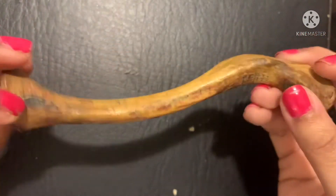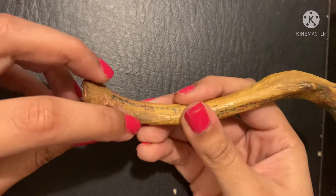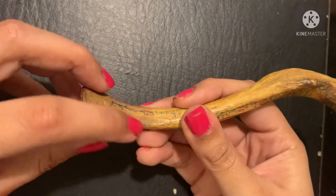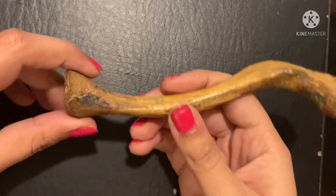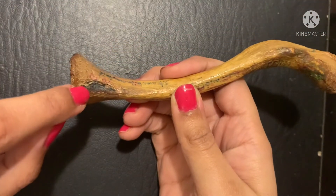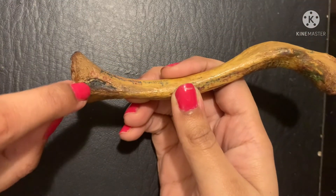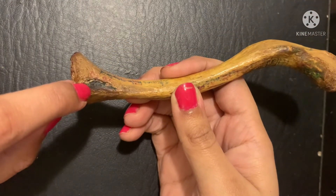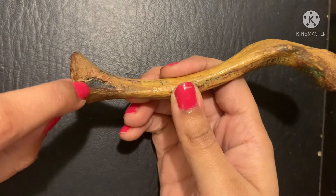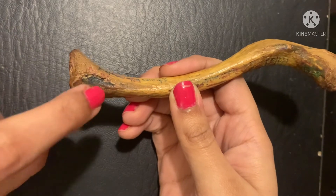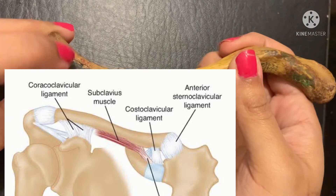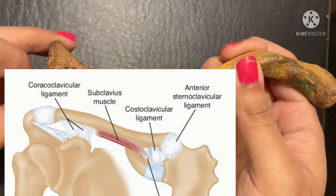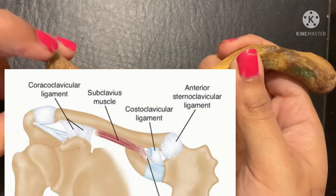We also discussed an oval impression on the medial end of the clavicle. This oval impression gives attachment to the costoclavicular ligament, which connects the clavicle to the first costal cartilage.